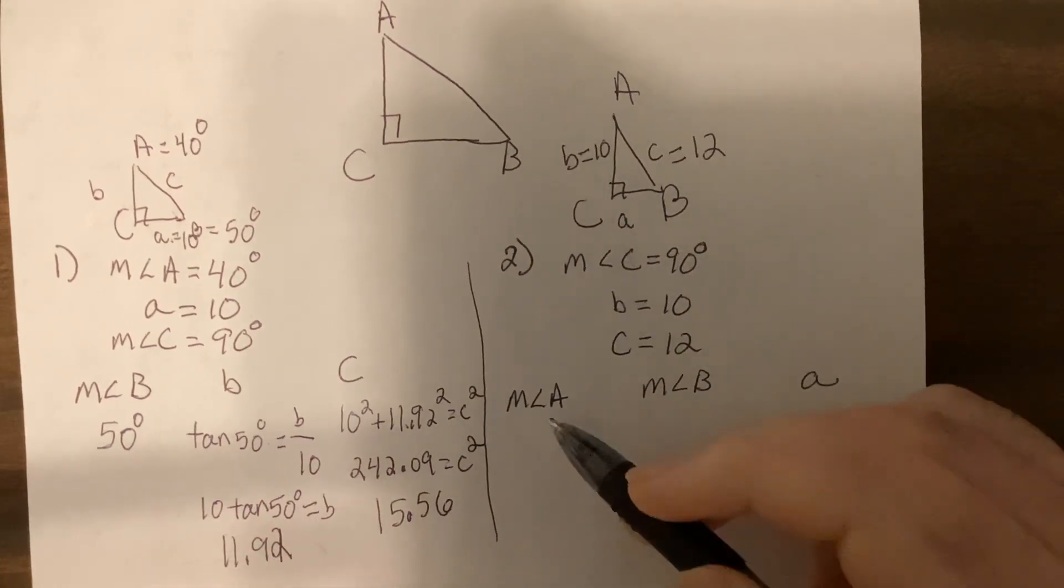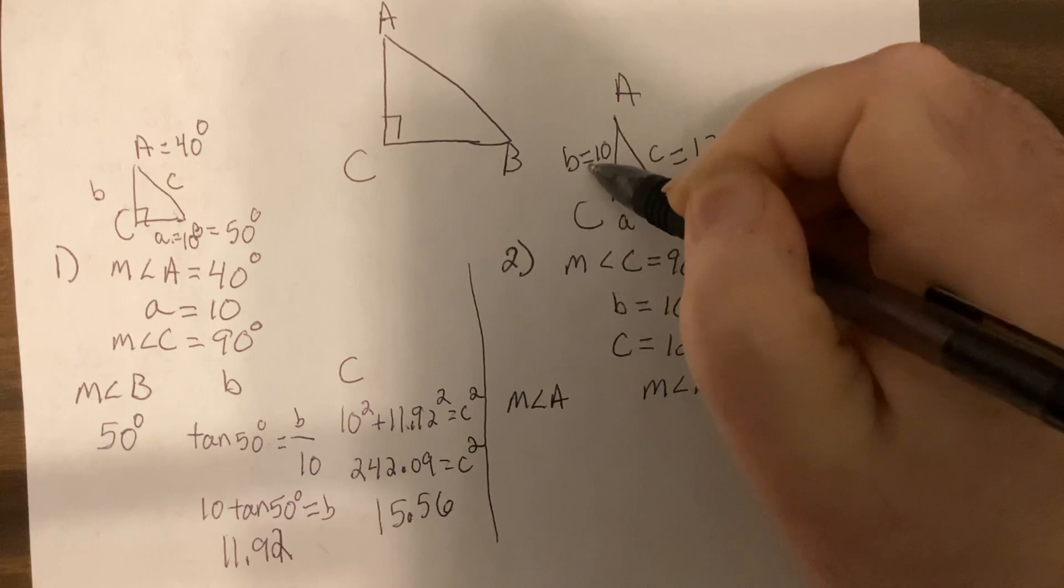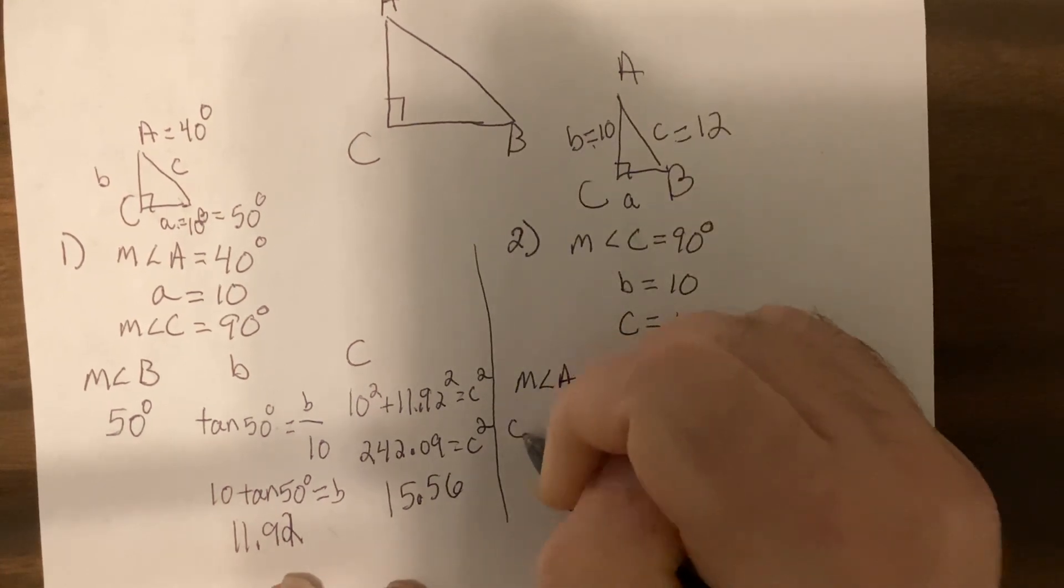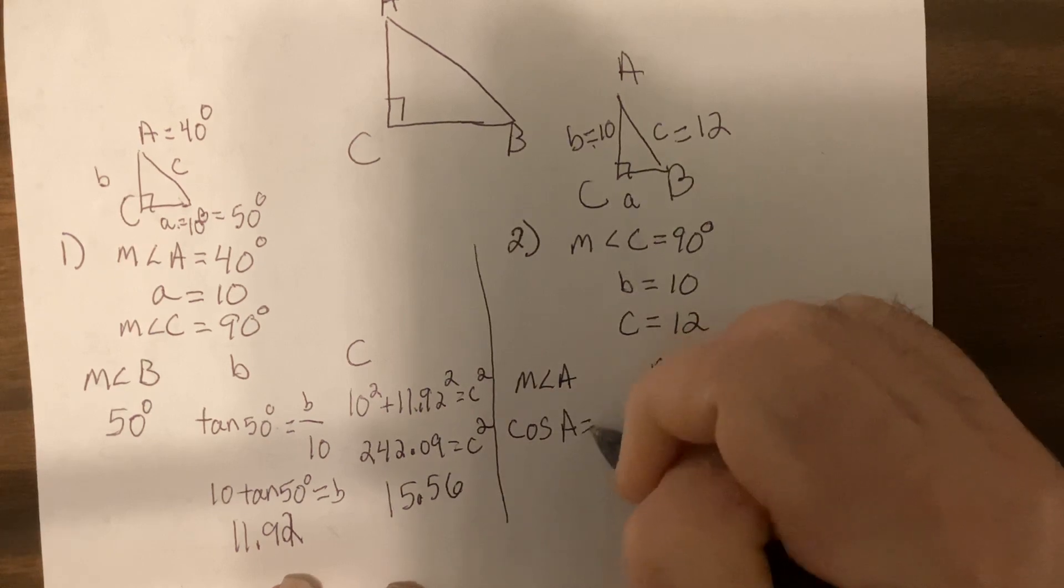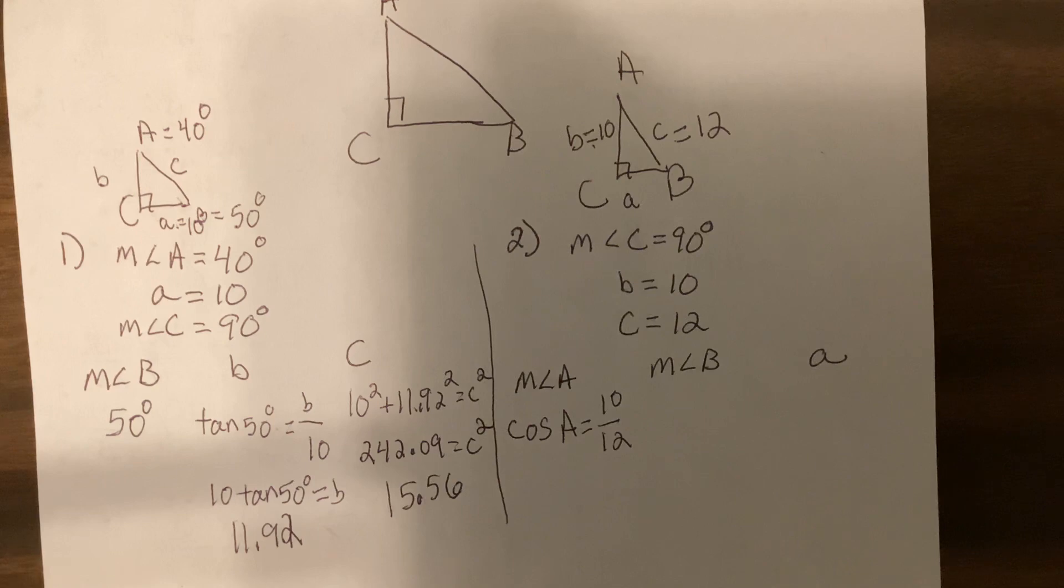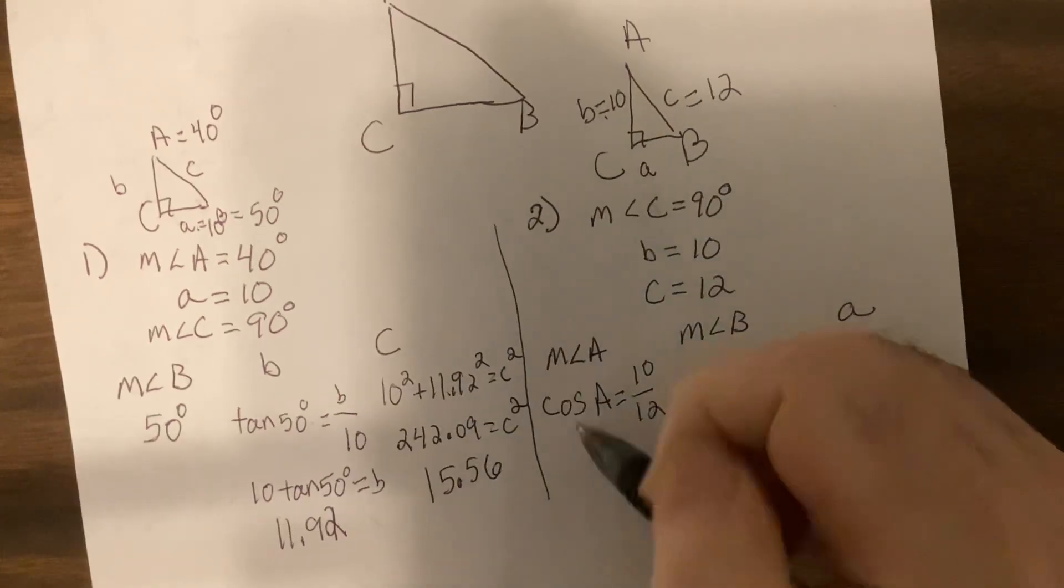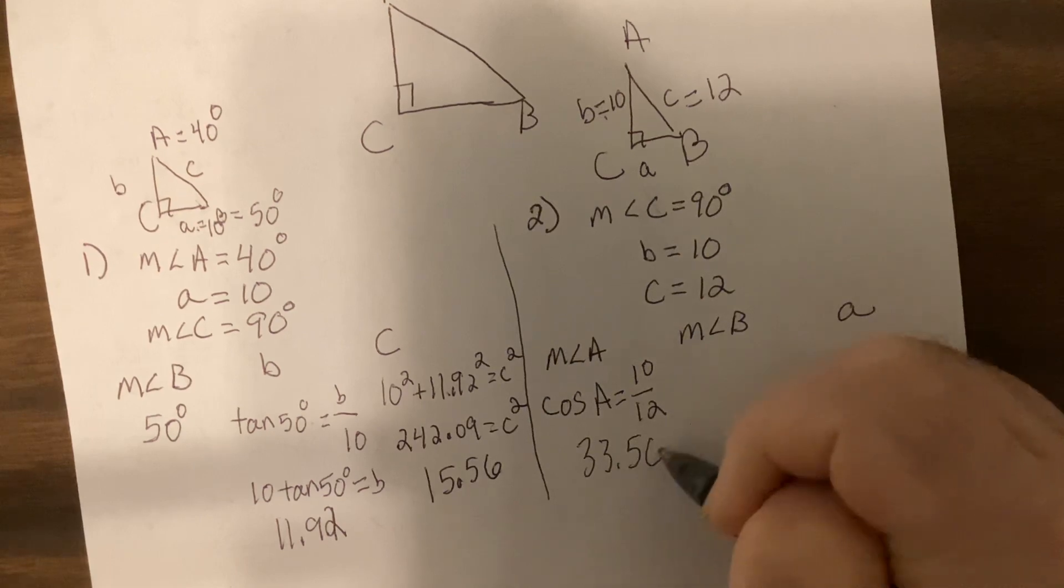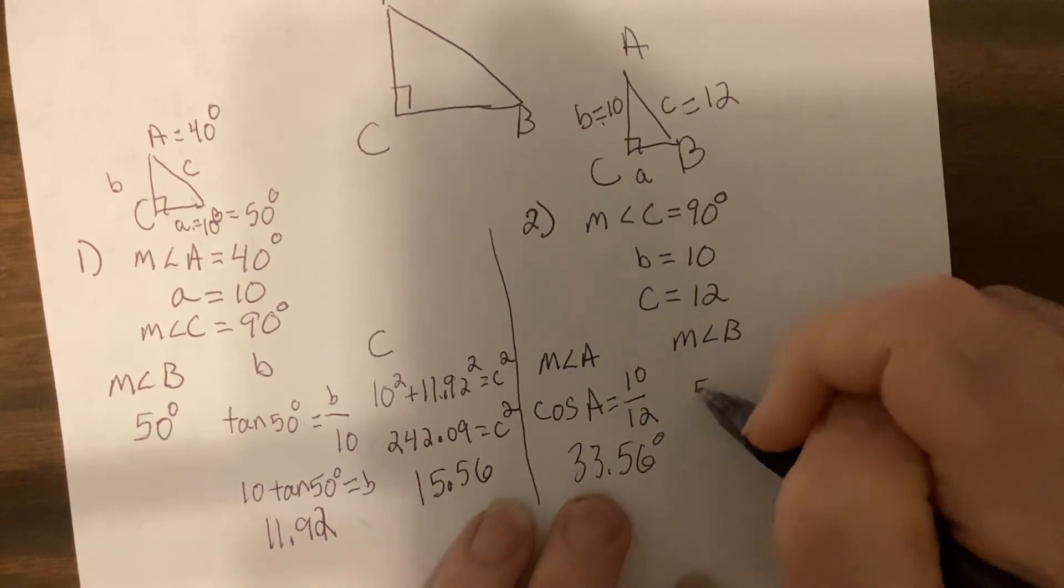Let's find angle A. I'm going to do adjacent and hypotenuse, which is cosine. So cosine angle A is 10 over 12. Now on this calculator we hit shift cosine of 10 divided by 12, and I get 33.56.